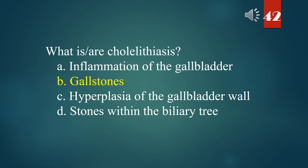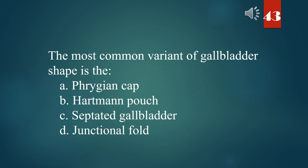The most common variant of gallbladder shape is the: A. Phrygian cap. B. Hartmann's pouch. C. Septated gallbladder. D. Junctional fold. The answer is A. Phrygian cap.